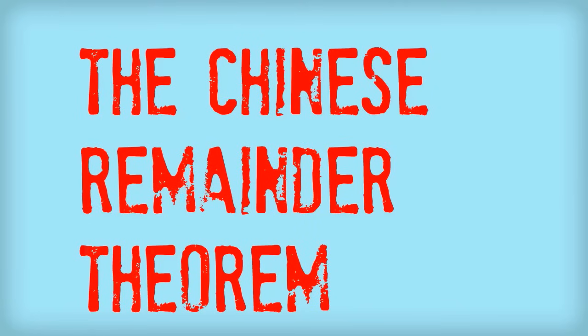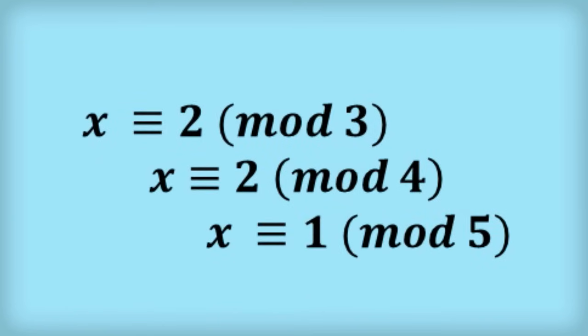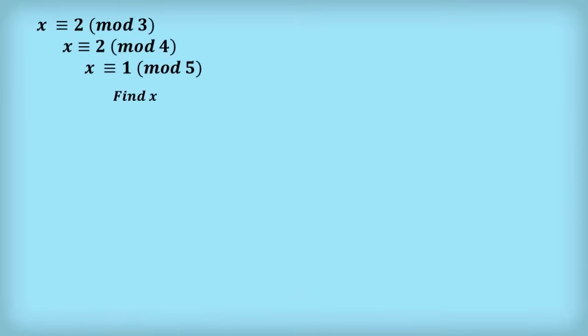Today, the Chinese remainder theorem made easy. Here's a typical problem: x ≡ 2 (mod 3), x ≡ 2 (mod 4), and x ≡ 1 (mod 5). Find x.